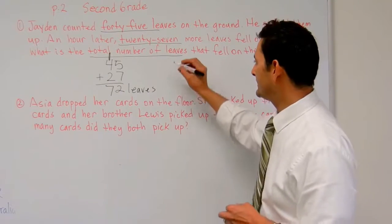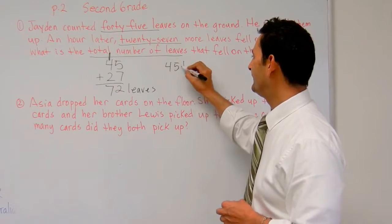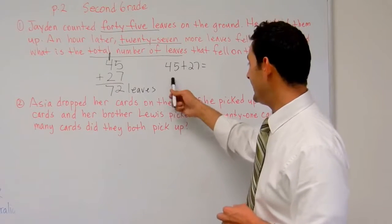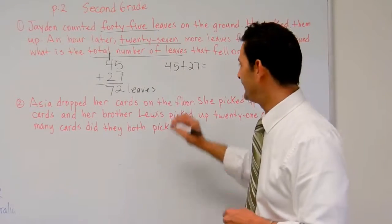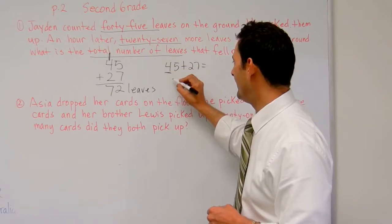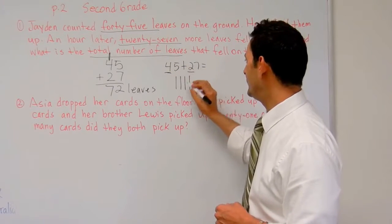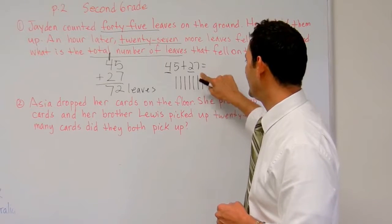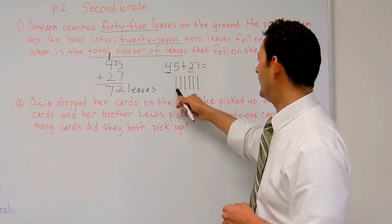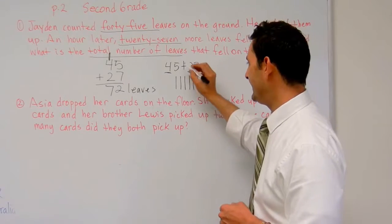Another way that you can do it is like this. 45 plus 27 equals. So, here, I'm going to make bundles of 10. So, here, I've got 4. I'm going to make 1, 2, 3, 4 bundles of 10. Here, I've got 2, 1, 2, 1, 2. So, I've got 1, 2, 3, 4, 5, 6. I've got 6 bundles of 10 here.